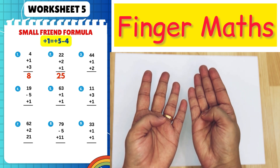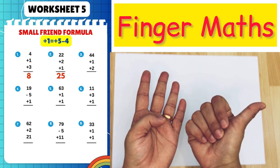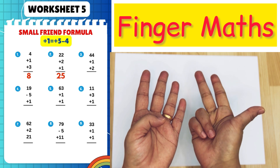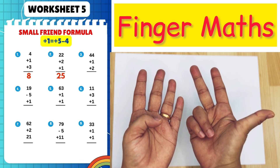44 plus 1, plus 5 minus 4, plus 2. Answer is 47.